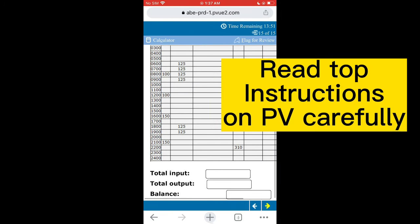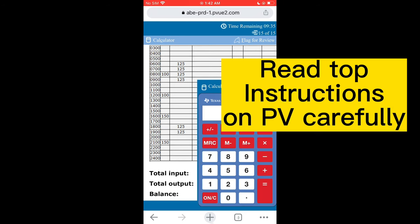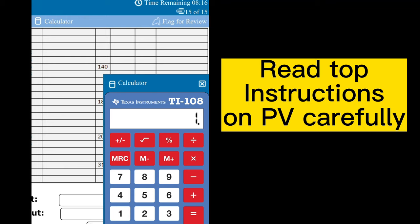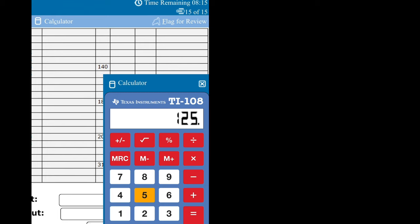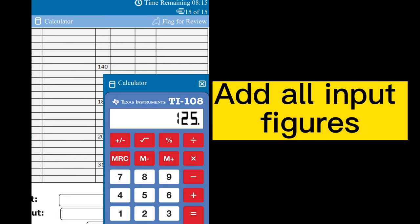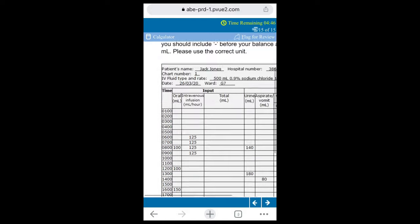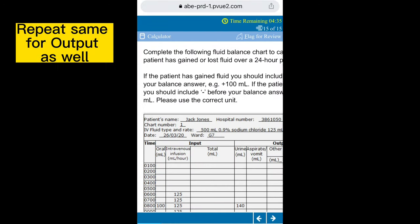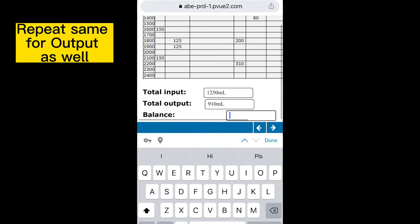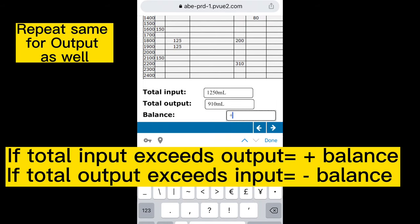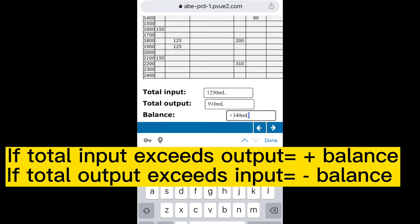This is our last question, the intake and output balance. I don't want to waste much time. You will go on Pearson Vue and just try it on your own. You just add everything you see at the input column, which is the urine and IV fluids. Add everything, every figure you see there, and then enter them into the box provided for the input column. Then do the same thing for the output - the urine and vomit. Add every figure you see there as well and enter it into the output column along with the unit, which is the mL.